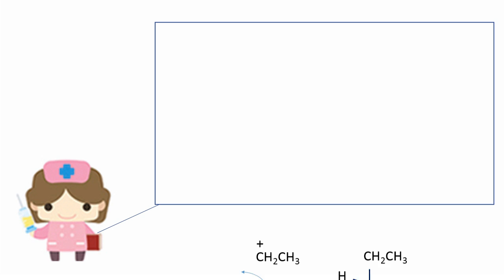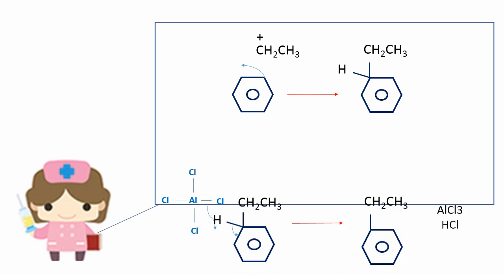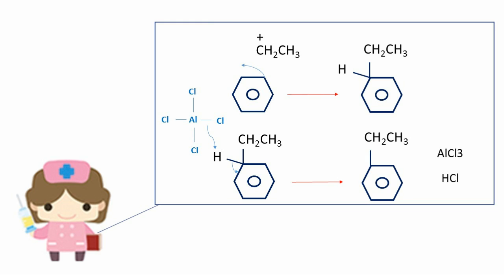The benzene reacts with the carbocation of ethene to form ethylbenzene by removing a hydrogen ion from the aluminium chloride ion. The aluminium chloride and hydrogen chloride catalysts are regenerated.